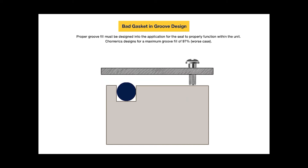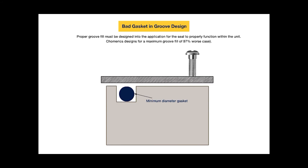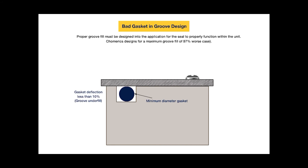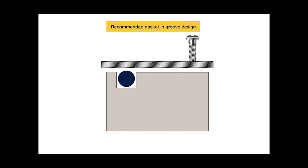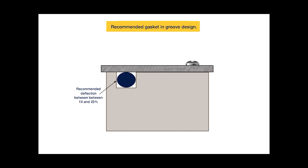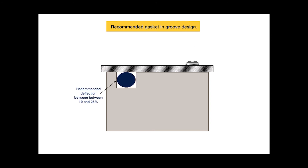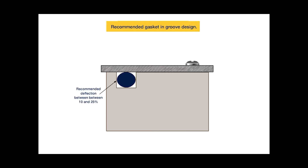This animation shows a gasket that's too small or undersized for the groove — you're getting less than 10% deflection, almost none at all, so you're not getting any electrical contact and effectively no environmental sealing. Finally, we have the 'Goldilocks' gasket — designed properly for the groove with no groove overfill, so the gasket isn't being damaged while still being compressed within the proper deflection range: for a solid-O, between 10 and 25 percent.